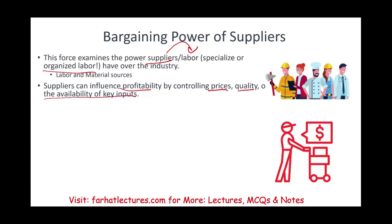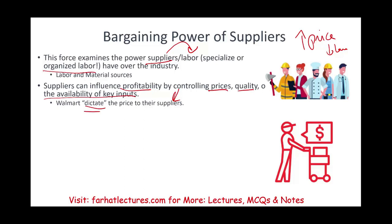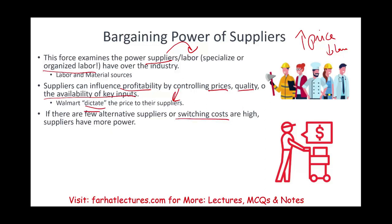If suppliers have the upper hand, they'll raise prices and make more profit while you make less. But the opposite can be true too — the business can dictate to suppliers. A company like Walmart tells its suppliers exactly how much they will pay, and if suppliers don't agree, Walmart will go elsewhere or manufacture the product themselves. If suppliers want access to Walmart's massive account, they have to accept Walmart's terms. But not all businesses have this leverage. If there are few supplier alternatives or switching costs are high, suppliers will have more power.